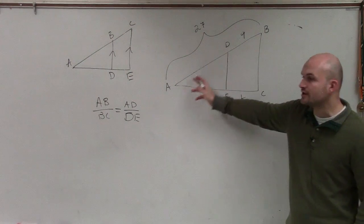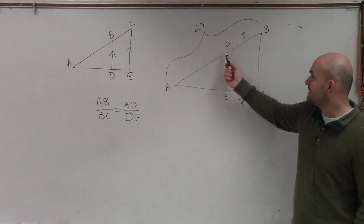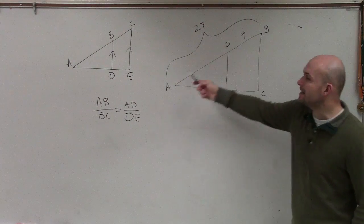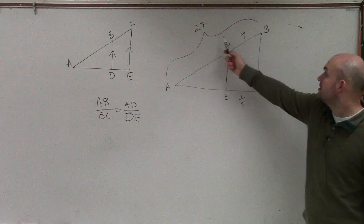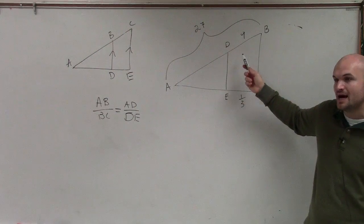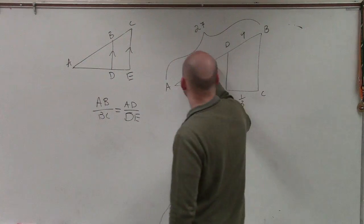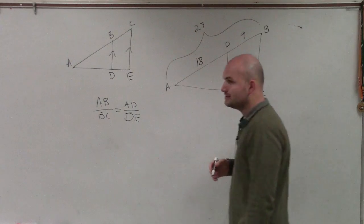Well, first of all, I need to figure out what AD is. And in this case, AD, we don't know. We know this is 9, and we know the whole length is 27. So if I take 27 minus 9, that's going to give me 18.